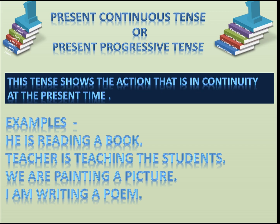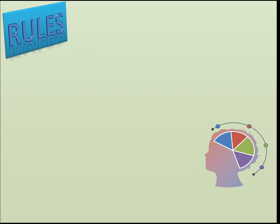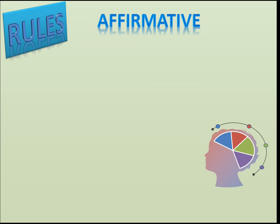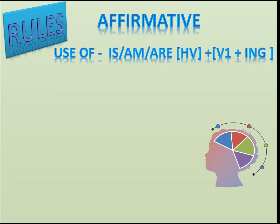Every tense has its own rules, so this tense also has rules. Let's discuss the rules and you have to keep them all in your mind. The first type of sentence is affirmative. Affirmative sentences are those which give a positive response. In affirmative sentences of this tense, we use a helping verb — is, am, or are.